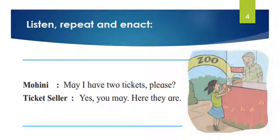In the third picture, you can see a zoo, a ticket seller, and a girl named Mohini. Mohini says, 'May I have two tickets, please?' The ticket seller says, 'Yes, you may. Here they are.' So Mohini is asking the ticket seller for two tickets, and the ticket seller gives the tickets to Mohini.